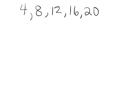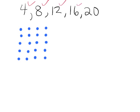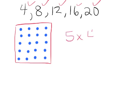Traditionally, as a convention, we would draw the array with five rows of four dots. There's our array — this is tradition, this is convention. There's no mathematical reason why we draw it this way. It's such that this is five groups, or five rows of four dots.